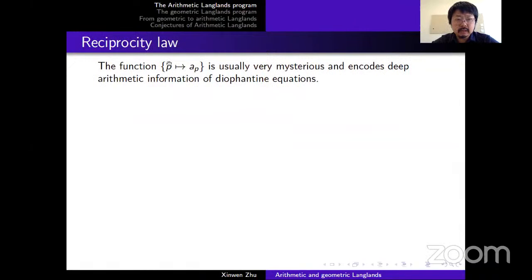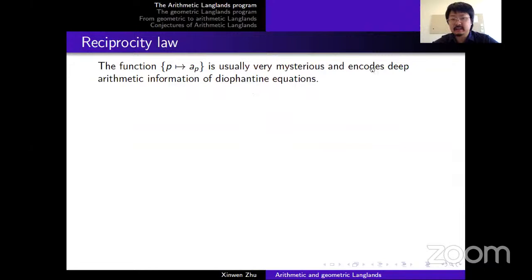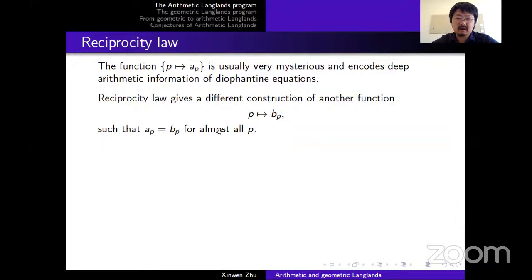The function from p to a_p is usually very mysterious and encodes deep arithmetic information of Diophantine equations. How to study it? This is studied by reciprocity laws. Roughly speaking, a reciprocity law is another construction — a different way to construct such a function p to b_p — such that a_p and b_p are the same for almost all p.